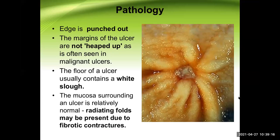If the surgeon performs upper GI endoscopy, they can identify the ulcer by these features. If any doubt exists, a biopsy is always taken from the edge of the ulcer — not the base, which only has necrotic tissue. Biopsy should be taken from the edge to rule out malignancy, but only in the case of gastric ulcer. Duodenal ulcer never turns into malignancy, so biopsy is not indicated there.